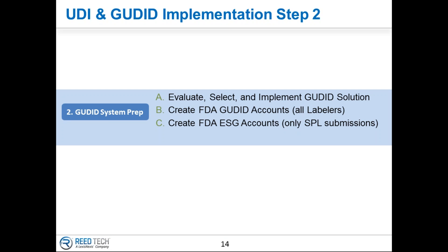The FDA technically calls this scenario a misbranding. Some companies, if they are extremely cautious, will stop production of that product. You obviously want to rectify that as soon as possible. We have not heard of any fines levied or imprisonments or civil activities that the FDA has levied against a company. So I believe there's going to be some leniency in getting started. It would be best to identify those products and have some type of plan in the event the FDA comes on site.